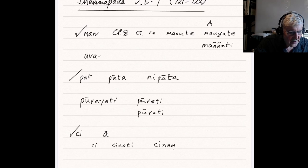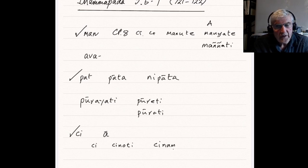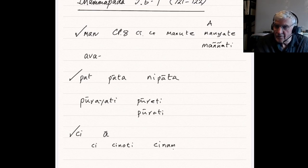The next verse follows the structure of the one we've just looked at. Save that the words papa and bala are changed for punya and dhira. So, punya, the opposite of papa, and dhira, the opposite of bala, the wise person. So, mava manyeta punyasa, don't underestimate good. In other words, don't underestimate, in the context of this verse, the cumulative force of even small acts of good.